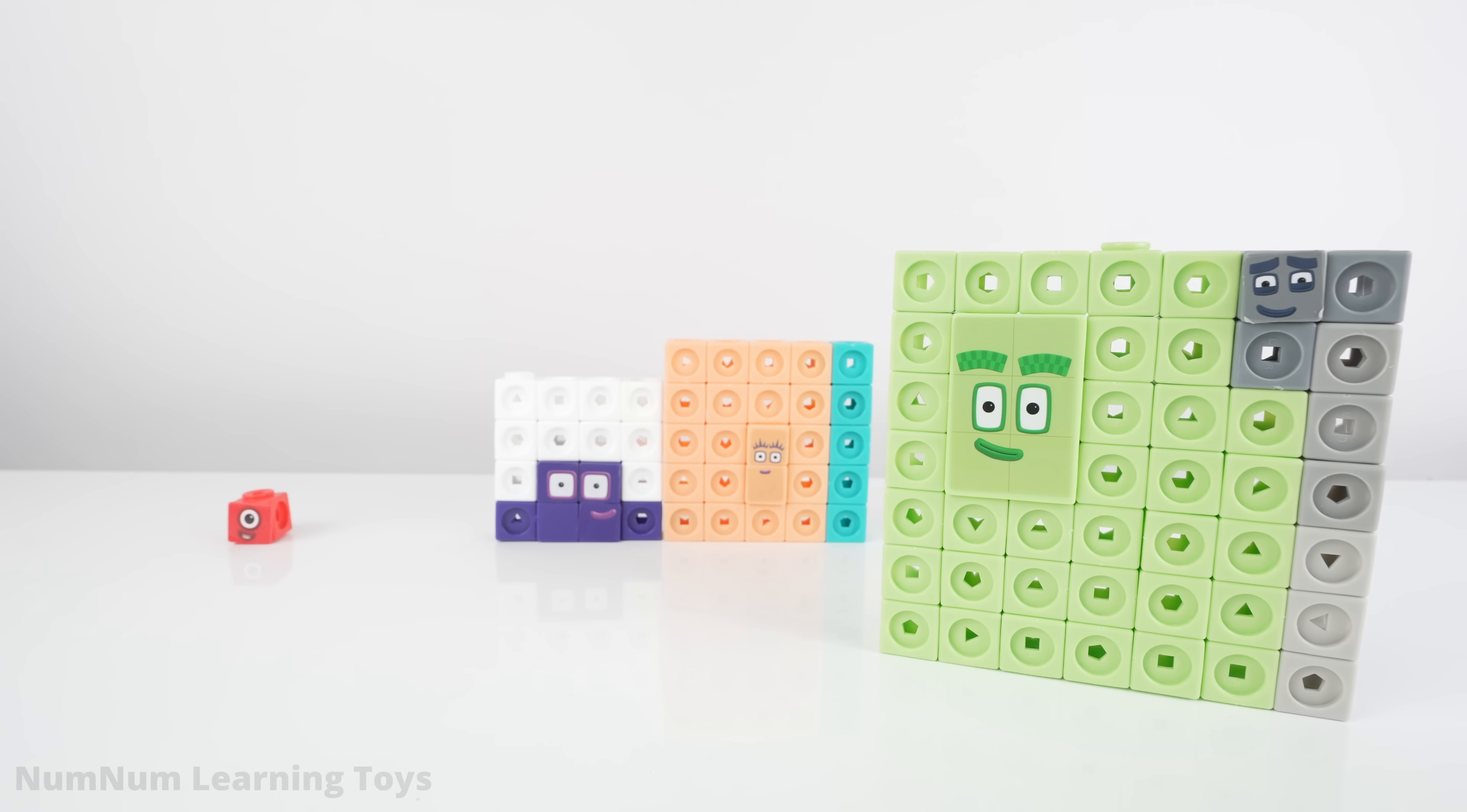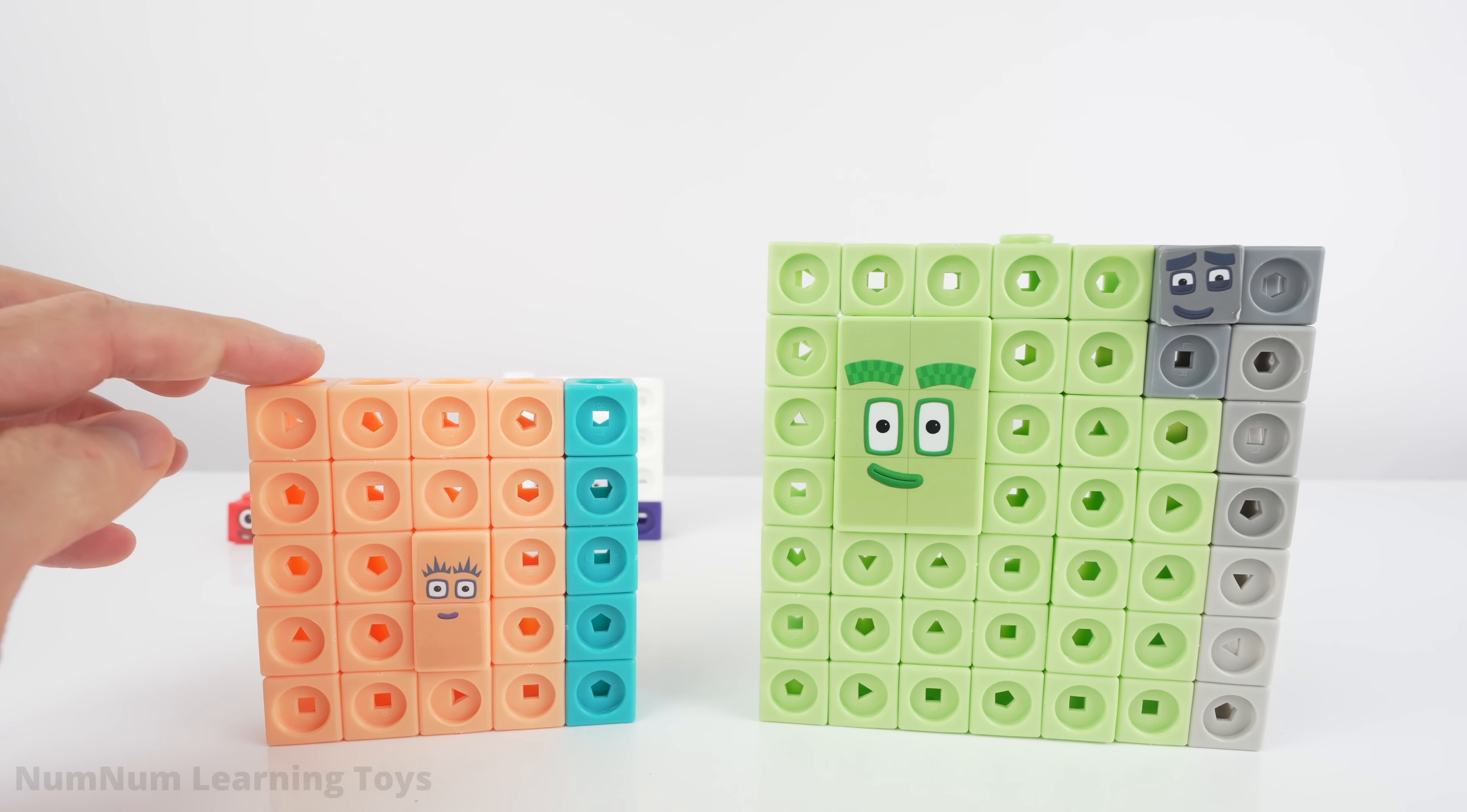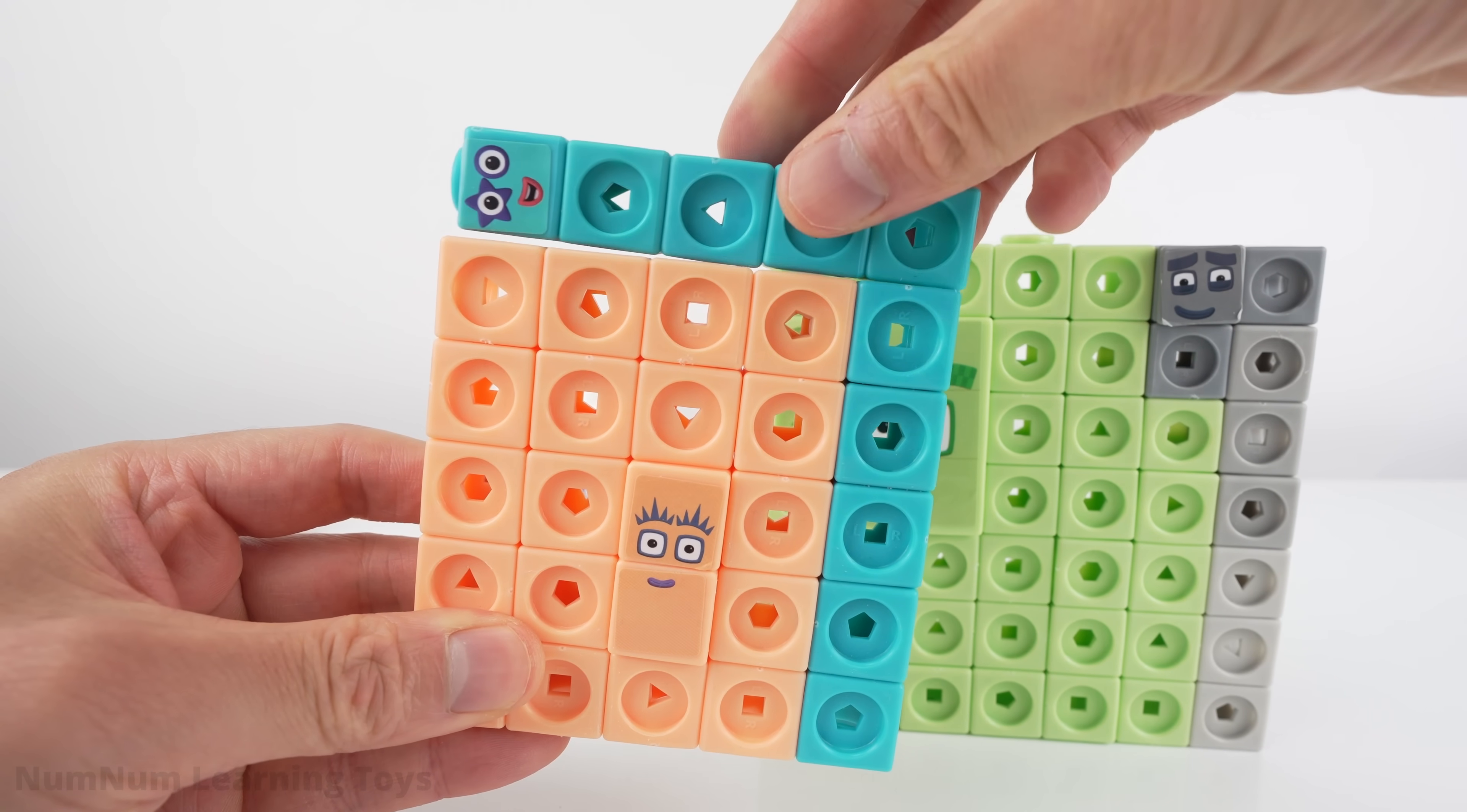Let's continue adding squares to this new square. How about this one? Number twenty-five. Twenty-five is five units tall and five units wide.